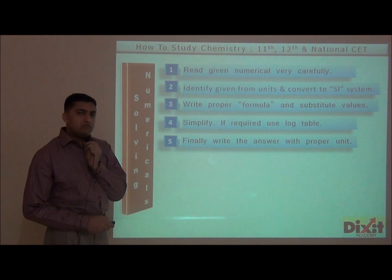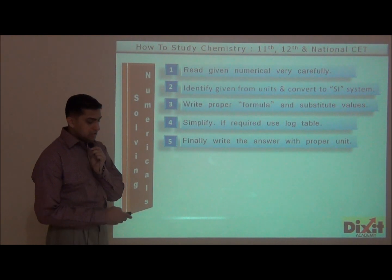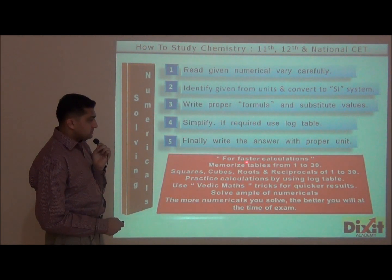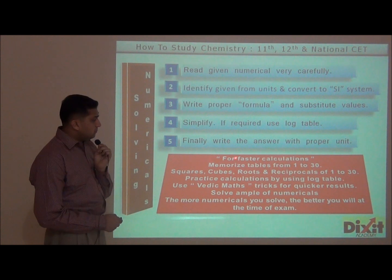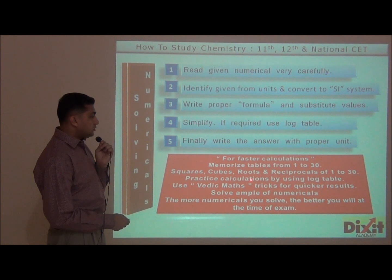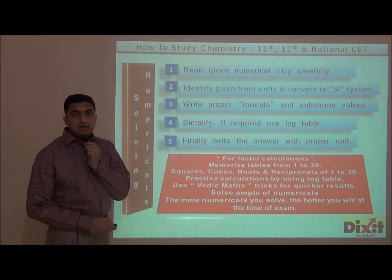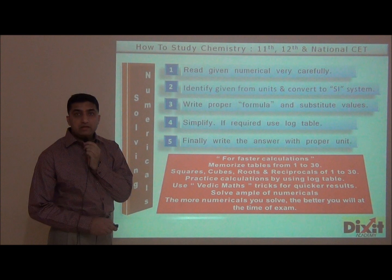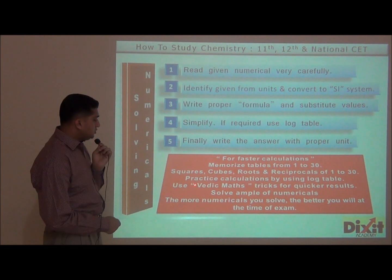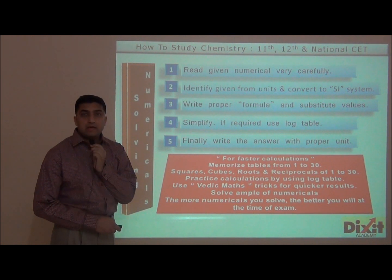When I check papers, I often find many students forget to write the proper unit. If you forget the unit, you will likely lose marks. Here are some tips for faster calculations. Step 6: Memorize tables from 1 to 30, and memorize squares, cubes, square roots, and reciprocals of numbers 1 to 30. Step 7: Practice calculations using a log table. If you take too long for calculations, you will find a shortage of time while solving other questions. Use Vedic maths tricks for quicker results and solve ample numericals — the more numericals you solve, the better you will be at examination time.